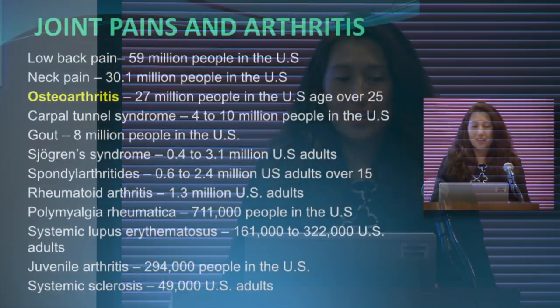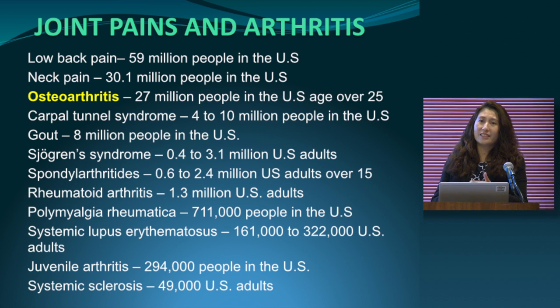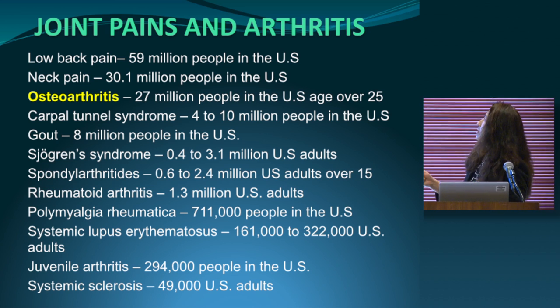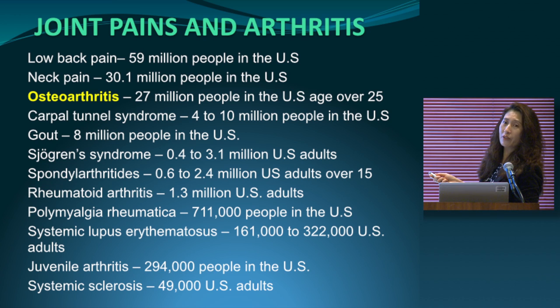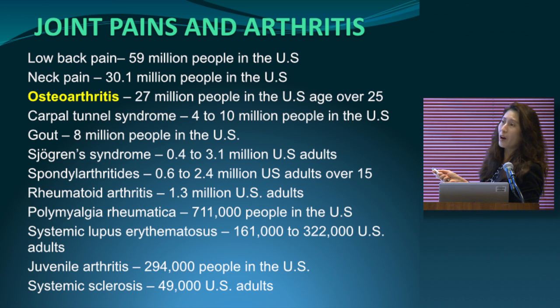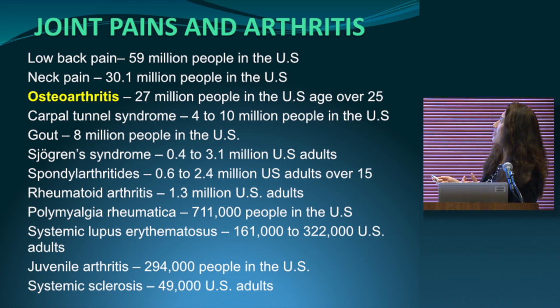This slide has some statistics about joint pains and arthritis. For lower back pain we have about 59 million, neck pain about 30.1 million. Osteoarthritis, the most common form of arthritis, affects about 27 million — roughly a quarter of our population. Carpal tunnel syndrome, while not arthritis per se, gives lots of patients joint pain sensations, affecting about 4 to 10 million people.